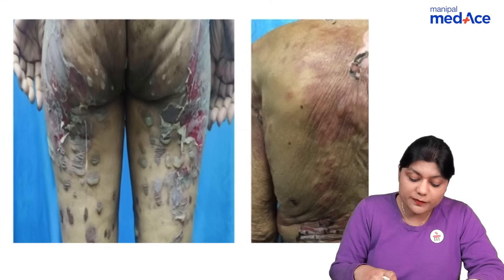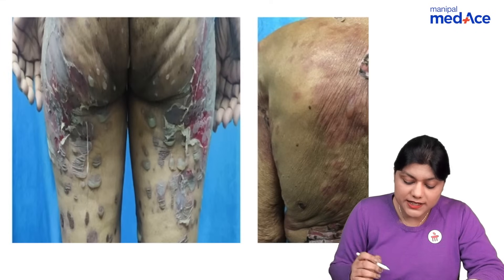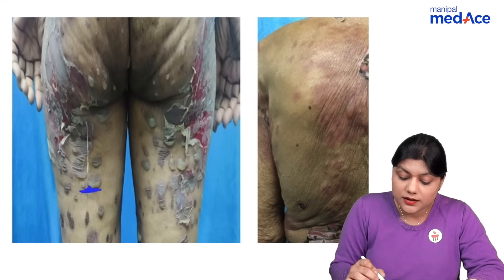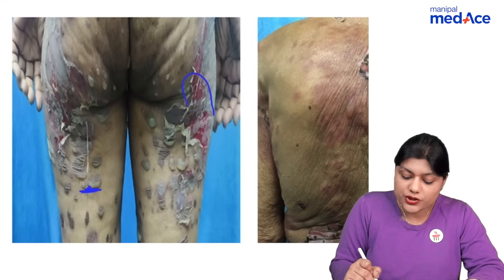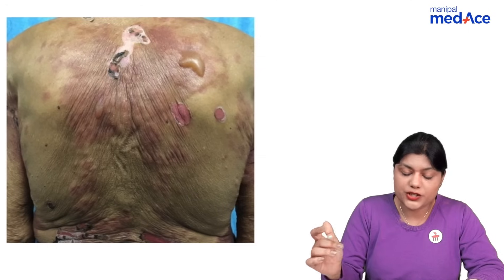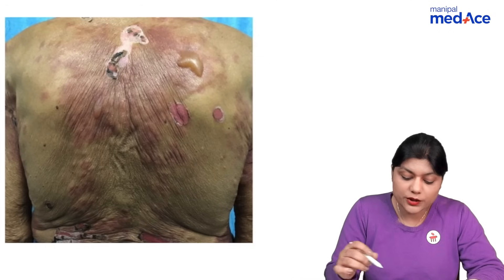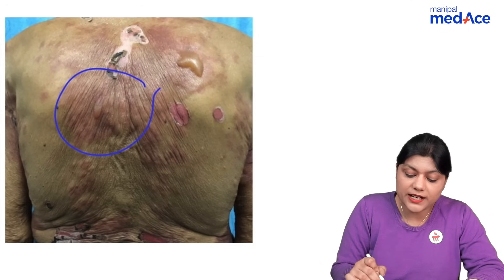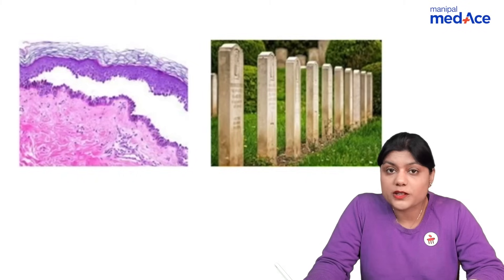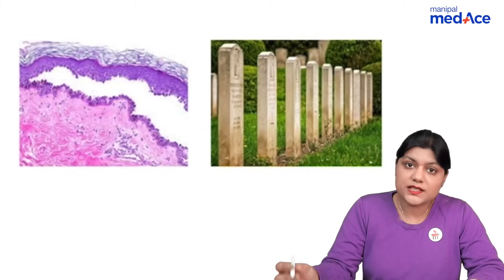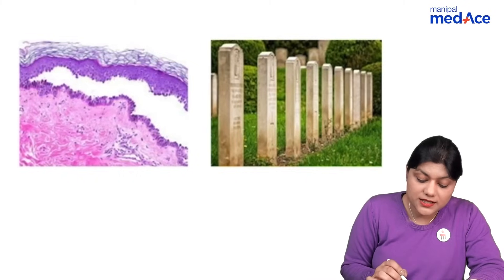This is a patient of pemphigus vulgaris with flaccid bulla and crusted erosions. And a patient of bullous pemphigoid with urticaria and tense bulla.